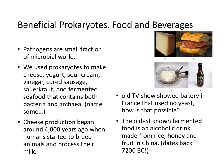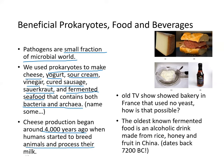Although pathogens are a small fraction of the microbial world, they cause a lot of problems. But prokaryotes can be useful too — we use them to make cheese, yogurt, sour cream, vinegar, cured sausage, and sauerkraut. Cheese production began about 4,000 years ago. The oldest known fermented food is an alcoholic drink made from rice, honey, and fruit from China, dating back to 7200 BC.